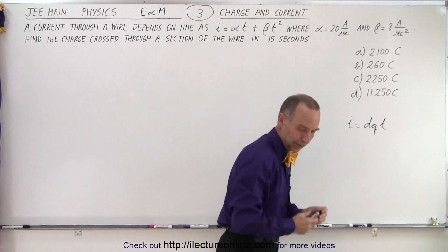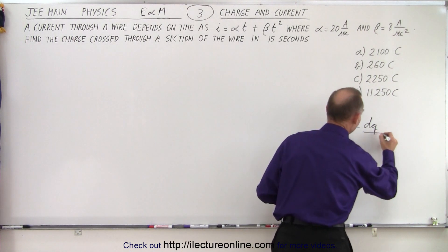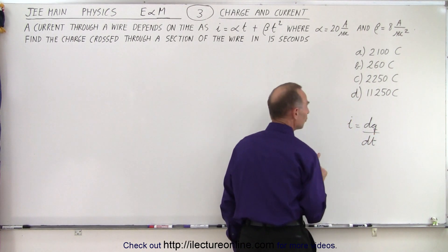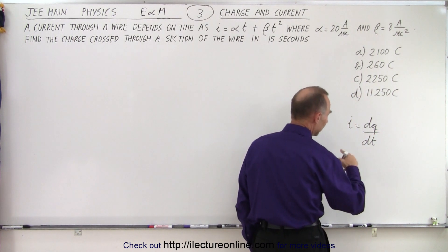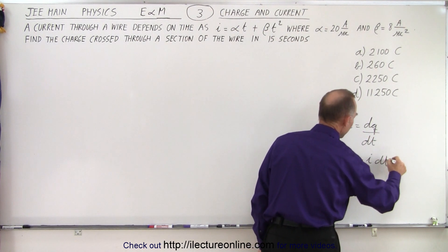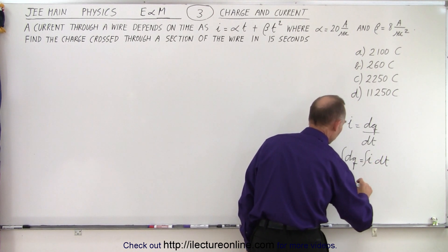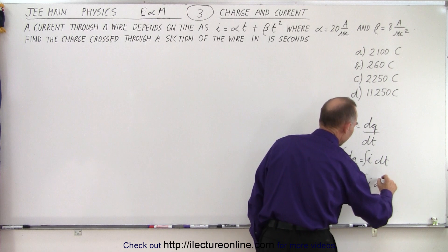Here we go, dq/dt. Notice that if we then want to find charge, we can say that dq is equal to i times dt, and then if we integrate both sides, we can say that q, the total charge, is the integral of i times dt.